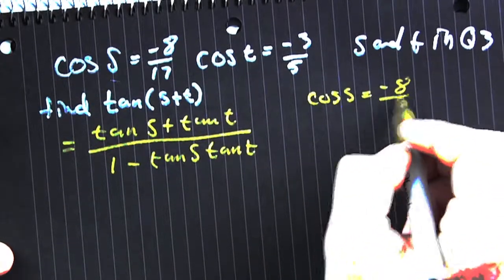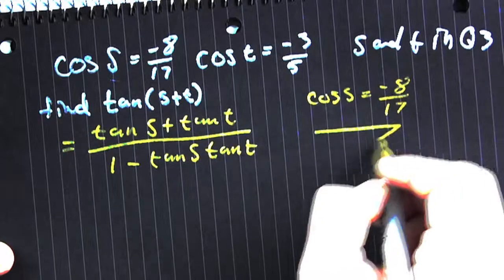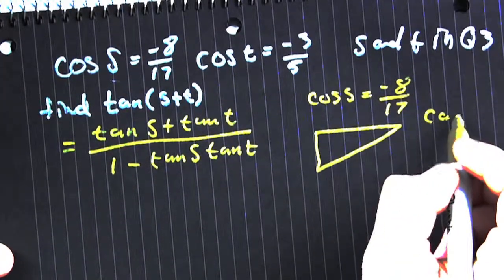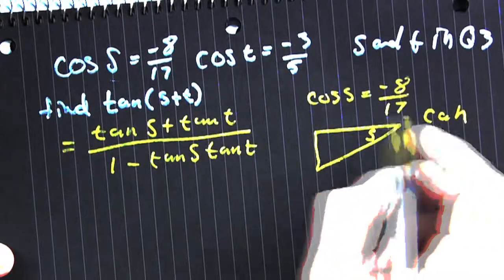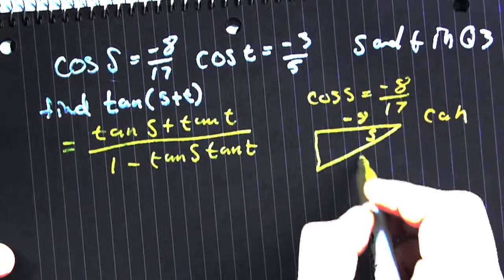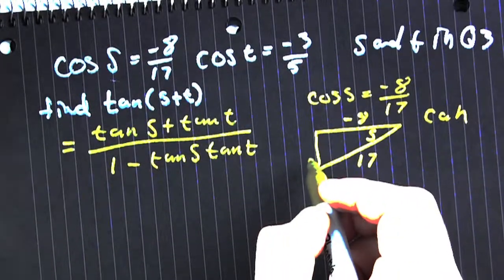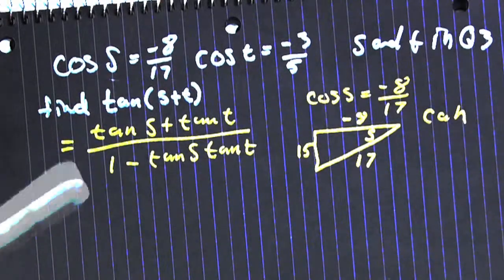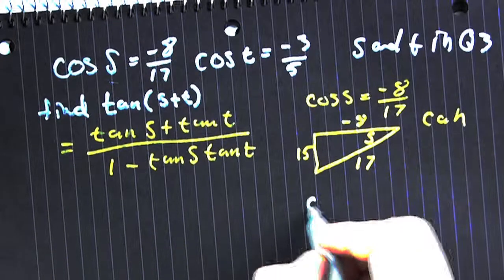Triangle s comes from the cosine of s is minus 8 seventeenths. The cosine is adjacent over the hypotenuse. So that's a minus 8, that's a 17. And we use the Pythagorean to complete that triangle. That should be a minus 15 because s and t are both in quadrant 3.